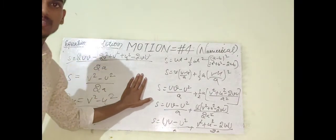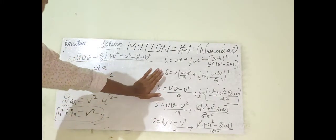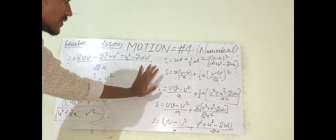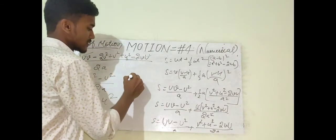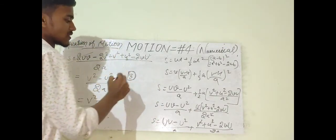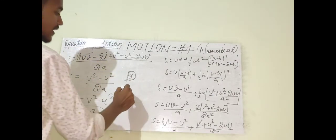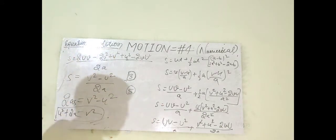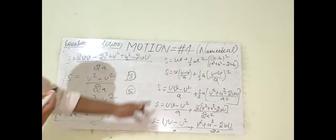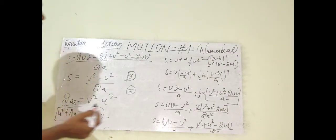This derivation is not difficult at all — it's quite easy. For board exams, the derivation carries a minimum of 3 marks and can go up to 5 marks if both second and third equations are asked together. If you don't show step-by-step working, marks will be deducted.